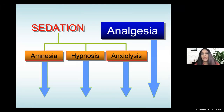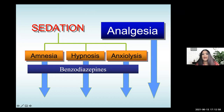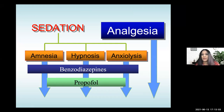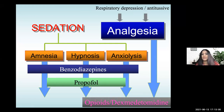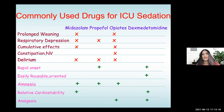Sedation and analgesia go hand in hand, and there are many tools in the armamentarium. Sedation has components of amnesia, hypnosis, anxiolysis, and analgesia. By and large, the mainstay of therapy has been benzodiazepines, and we have also used propofol. For analgesics, we've largely used opioids. Now we have dexmedetomidine, which produces weak sedation and also some analgesia. This is largely what we have in our armamentarium.